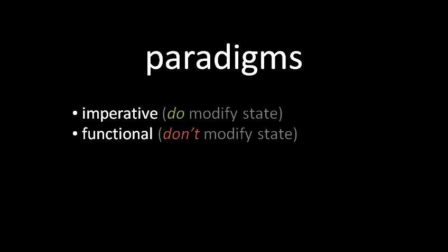In both imperative and functional programming, your code is made of the same stuff: functions, and those functions consist of expressions, variables, and some kind of control flow, branching. The key difference, though, is that in the functional style, you're not supposed to modify state.